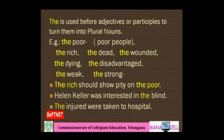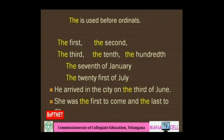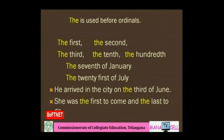'The' is used before ordinals — the first, the second, the third, the tenth, the hundredth. Ordinals show the order of things. Instead of saying 'one', we say 'first', showing the order. Examples: 'The seventh of January. The twenty-first of July. He arrived in the city on the third of June. She was the first to come and the last to go.' When ordinals are used, they should be preceded by the definite article 'the'.